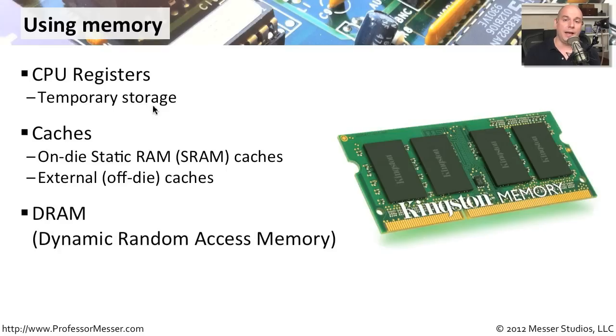This dynamic RAM is where a lot of information is stored on our system. When we have 2 gig, 4 gig, or 8 gigabytes of memory, we're referring to this dynamic memory. Sometimes we set aside some memory for paging or virtual memory. There are many places inside our computer where we're taking advantage of memory.